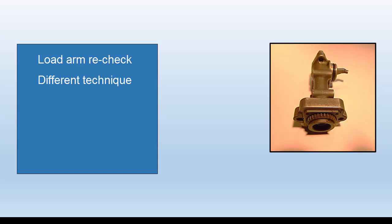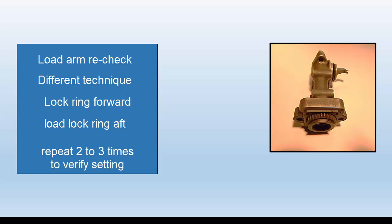Apply 100 inch pounds or slightly more of clockwise torque to the first load arm quill shaft and pull the lock ring forward out of the housing about one eighth of an inch. Then relax the torque applied. Lightly load the lock ring aft with two fingers of your left hand while you slowly apply torque wrench torque with the right hand as you read the torque wrench value.